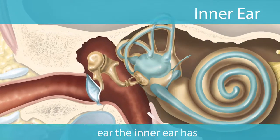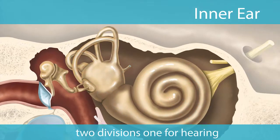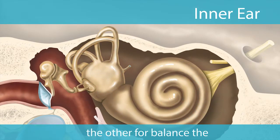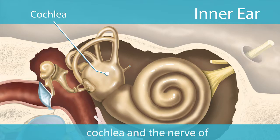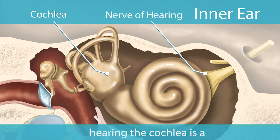The inner ear has two divisions: one for hearing and the other for balance. The hearing division consists of the cochlea and the nerve of hearing.